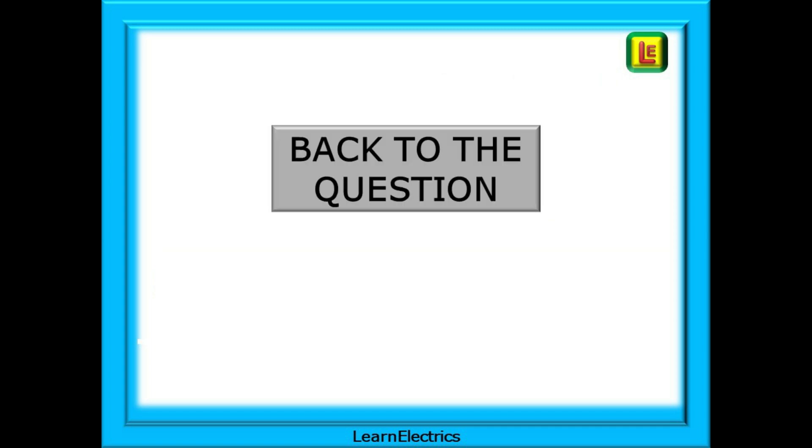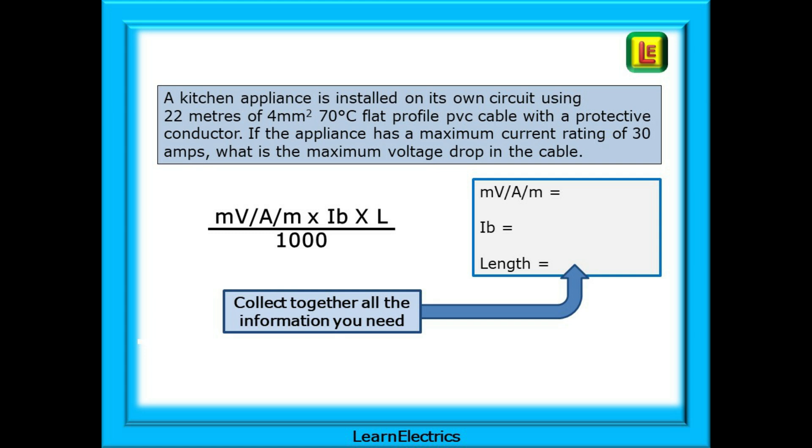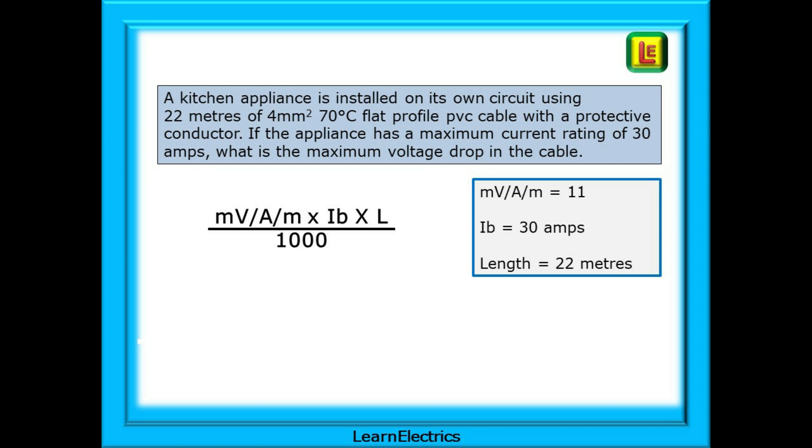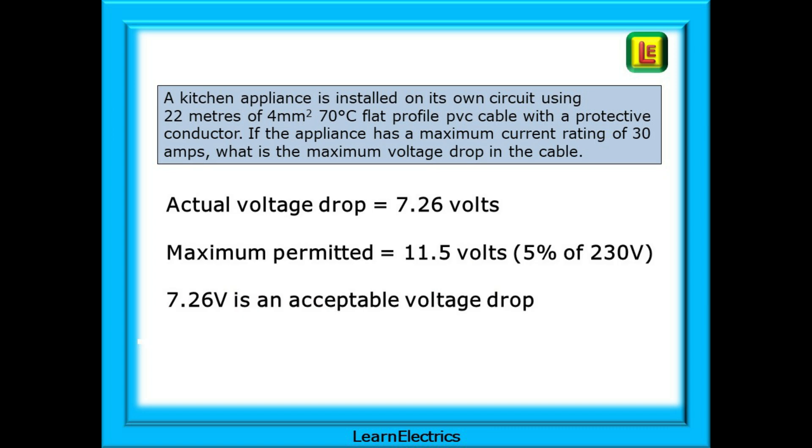Back to the question now. Here's the question and the formula. To help us to put the numbers into the formula I always write down on the right hand side of the page all the numbers that I need to know. And now I can extract each of these numbers from the question or from the tables. I've done it this way for 40 years, it's an organised way of doing things and it works. It keeps you in control of the question and you can easily trace where you went wrong if you have a problem. Put the numbers into the equation and out comes your answer. Our actual volts drop is 7.26 volts. This is well below the maximum permitted value of 11.5 volts, the 5% figure for non-lighting circuits.